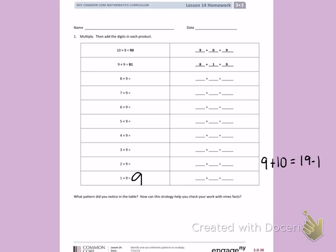19 minus 1 is 18. I can continue that strategy. 18 plus 10 more equals 28. Minus 1 equals 27.